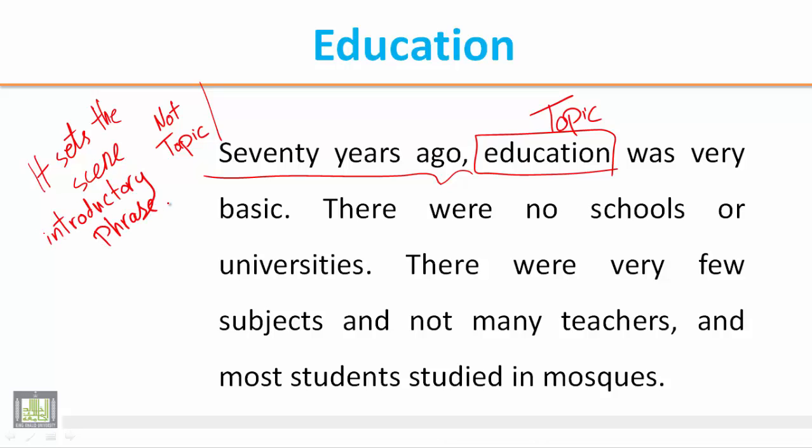Or grammatically speaking, we call it an adjunct, which is like ضرف زمان — an adverb of time.